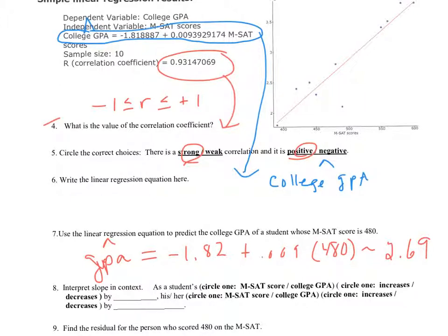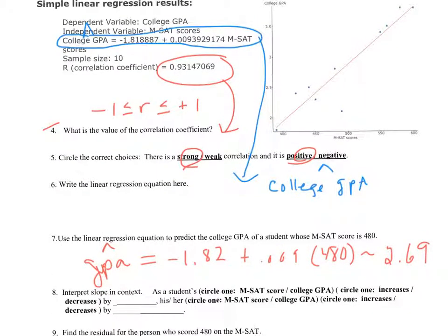And notice that seems reasonable. Here's 480 roughly, and if you go up to the line and go over, you see you're getting a predicted GPA of about 2.6, 2.7.